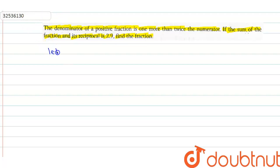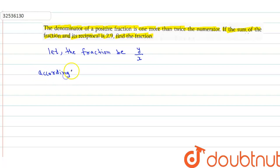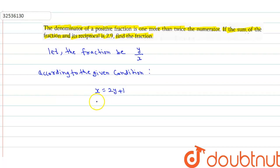So, let the fraction be y upon x. Then, according to the given condition, x equal to 2y plus 1, which gives y equal to (x minus 1) / 2 — this is equation 1. And the second condition: y upon x plus its reciprocal x upon y equal to 2.9.